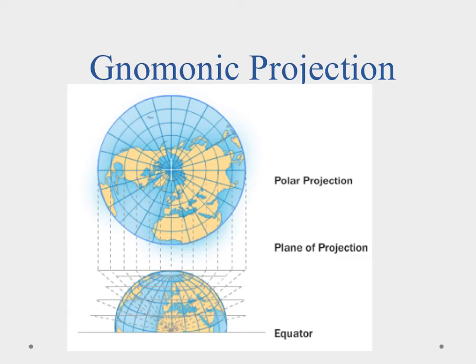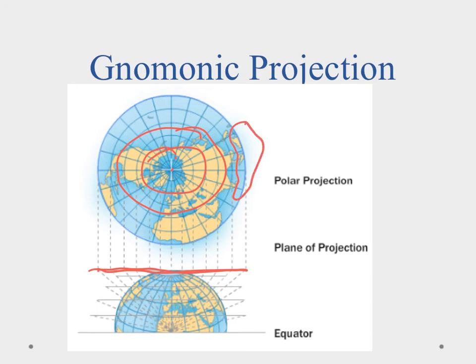The gnomonic projection is like taking a piece of paper and setting it on one point on the earth and projecting the images out. This gives a really good representation around where it's touching. These are used a lot in navigation because they provide an accurate representation of that area and can be used to determine distances from one place to another. All of these projections do something a little bit differently — they have their benefits, but the further you get from the point of contact, the more distortion, and that's where maps become less useful.